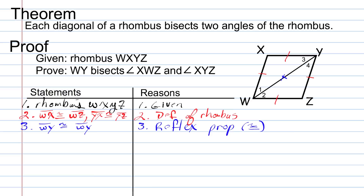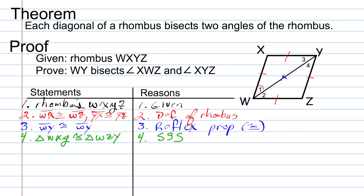Now I can make a triangle congruence statement: triangle W-X-Y is congruent to triangle W-Z-Y. That's the triangle on the top, W-X-Y, congruent to the triangle on the bottom, W-Z-Y. That's because of the side-side-side postulate for triangle congruence. Next, I can establish that angle 1 is congruent to angle 2, and angle 3 is congruent to angle 4. That's because of corresponding parts of congruent triangles are congruent, or CPCTC.